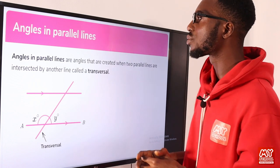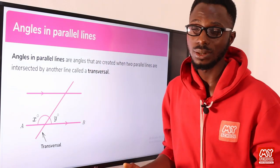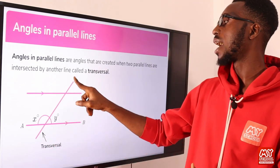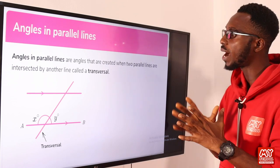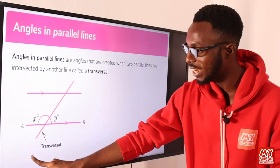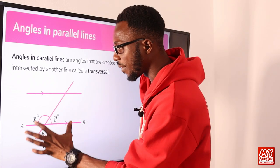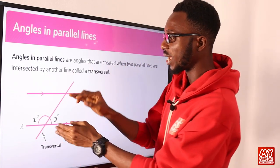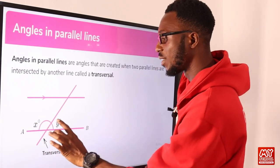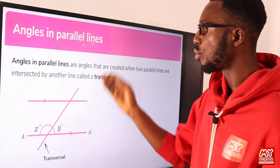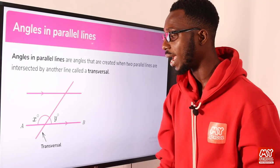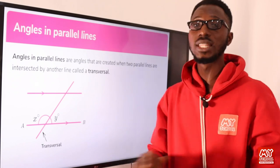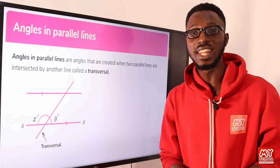We now talk about angles formed because of the presence of parallel lines. If we have a line running across these parallel lines, we refer to it as a transversal. Angles in parallel lines are angles that are created when two parallel lines are intersected by another line — the transversal. Parallel lines are lines that do not meet no matter how far they go. So here, if I add X to Y, I should get 180 degrees, and the same happens on the other side.